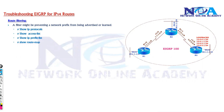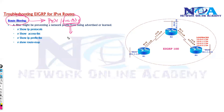The next possible reason for EIGRP not exchanging routes can be route filtering. In production networks, we implement route filtering to specify which routes should be advertised. Maybe you don't want some specific routes advertised to specific neighbors. In those scenarios, we configure route filtering options, matching routes with access lists, prefix lists, or route maps.